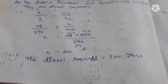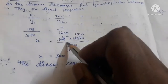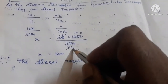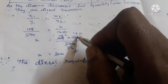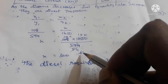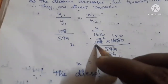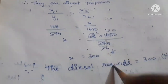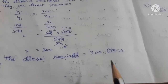Simplification: 108 into 1650 divided by 594. Using the 11 times table, working through the division: 5 elevens are 55, remainder 4; 4 elevens are 44; then 150 into 2 is 300. So the diesel required is 300 litres.